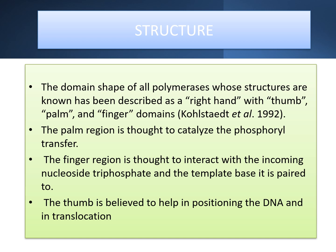Regarding the structure of the enzyme: the domain shape of all DNA polymerases whose structure is known has been described as a right hand with thumb, palm, and finger domains. The palm region is responsible for catalyzing the phosphoryl transfer. The finger region is the main area where they interact with the incoming nucleoside triphosphate and the template base to which it is paired. The thumb is believed to help in positioning the DNA and its movement during the translocation process.